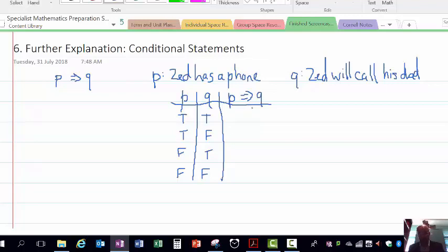And the P implies Q, now let's look at it this way. It's a bit like did anyone lie—it's one way of thinking about it. If we make a compound statement out of P and Q, it would be an if-then statement. It would be: if Zed had a phone, then Zed will call his dad.